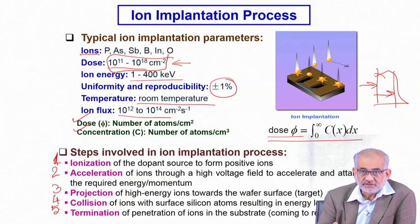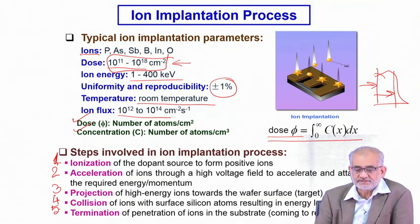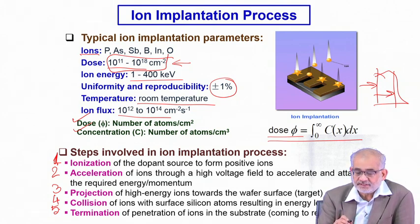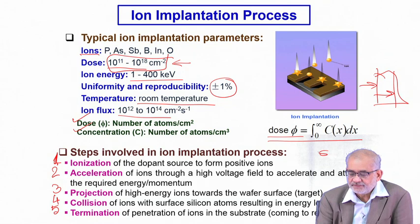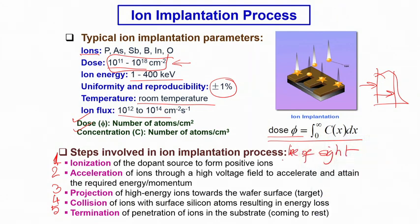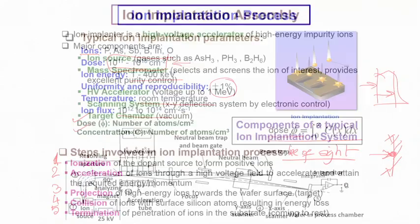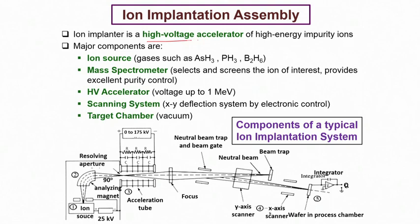One important thing to realize is that ion implantation is essentially a line-of-sight process, which means if this is the substrate and this is where the ion beam is implanted, we are catering only to that specific region and not elsewhere. The process is purely confined to the region it is seeing. So it is a line-of-sight process and we need a high voltage accelerator, because otherwise the ions will not acquire sufficient kinetic energy and momentum to enter into the solid substrate.